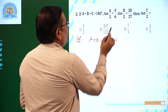Now tan 70 times tan 20: since 70 plus 20 equals 90 degrees, tan 70 is cot 20, and cot 20 times tan 20 equals 1 — so that product is 1 and those terms cancel. This gives tan 70 minus tan 20 equals 2 tan 50 degrees.